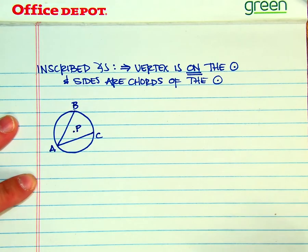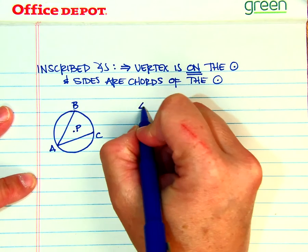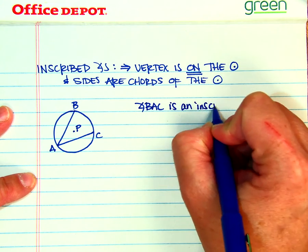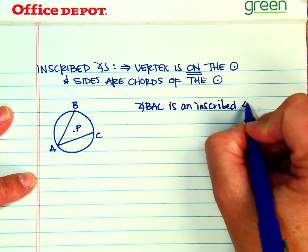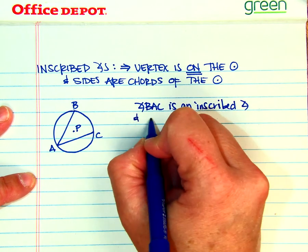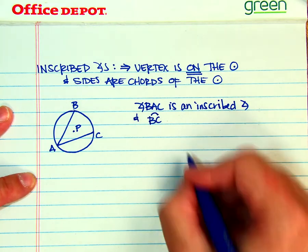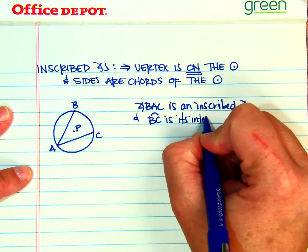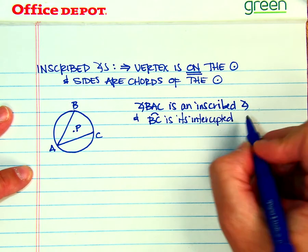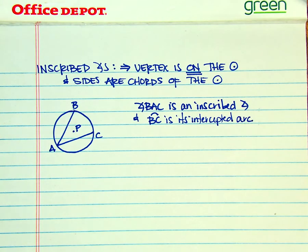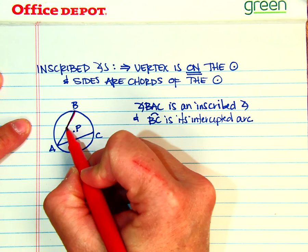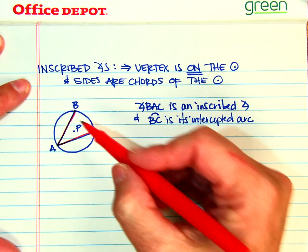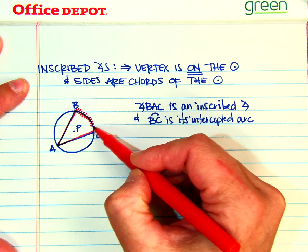So if I have circle P, then I could say that angle BAC is an inscribed angle and arc BC is its intercepted arc. So what you're going to be doing is finding your inscribed angle, and then if you were to take these two pieces and smash them together, this would then be your intercepted arc.